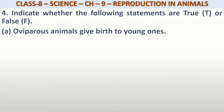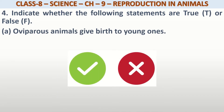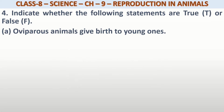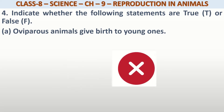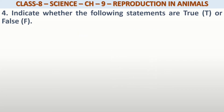A. Oviparous animals give birth to young ones. Oviparous animals जो हैं, young ones अपनी तरह produce करते हैं? No, this is false. OV-parous animals क्या करते हैं? वो eggs lay करते हैं।